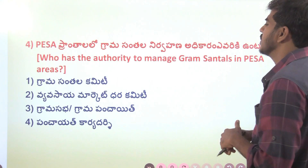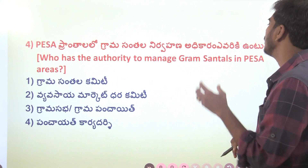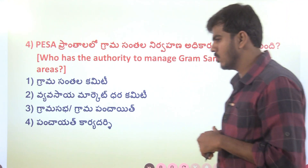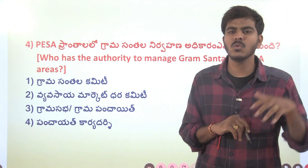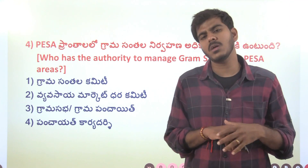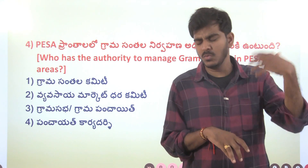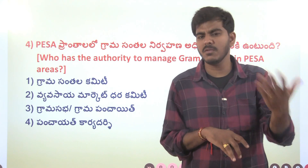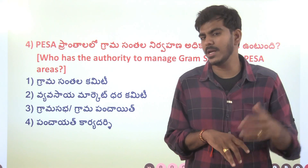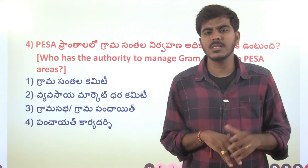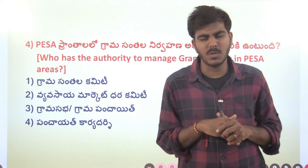The fourth answer is about the person who wants to earn a free income. The question about free income is very sensitive. We can find the income of a free income through this question.